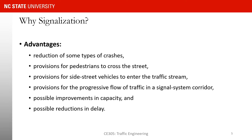Signals, if done the right way, can provide the possibility for coordination of green lights so that when you go through an arterial with several intersections, you arrive at each intersection when the traffic light is green. Think about downtown Raleigh — if you are going from north to south in the morning, the signals are very well coordinated and after your signal turns green, you have a good chance of going through several intersections without stopping. The same is true going north through downtown during the evening peak.